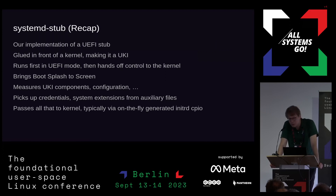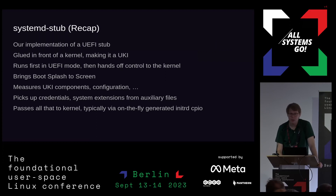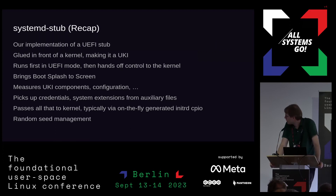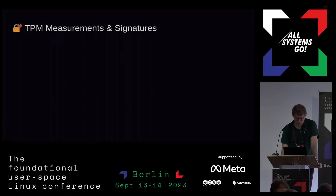Passing all that on to the kernel happens via an on-the-fly generated initrd CPIO. The initrd is traditionally a CPIO archive — just older and simpler than tar. Because it's extremely simple, we can generate one on-the-fly from systemd-stub — that's how we pass the credentials and system extensions to the rest of the system. There's also random seed management: we maintain a random seed in the ESP, a saved random seed that is updated every boot. The code was recently rewritten by the guy who maintains the kernel RNG. The big benefit is that on EFI systems, we'll always come up with a fully seeded random state no matter what, not reliant solely on the CPU RNG.